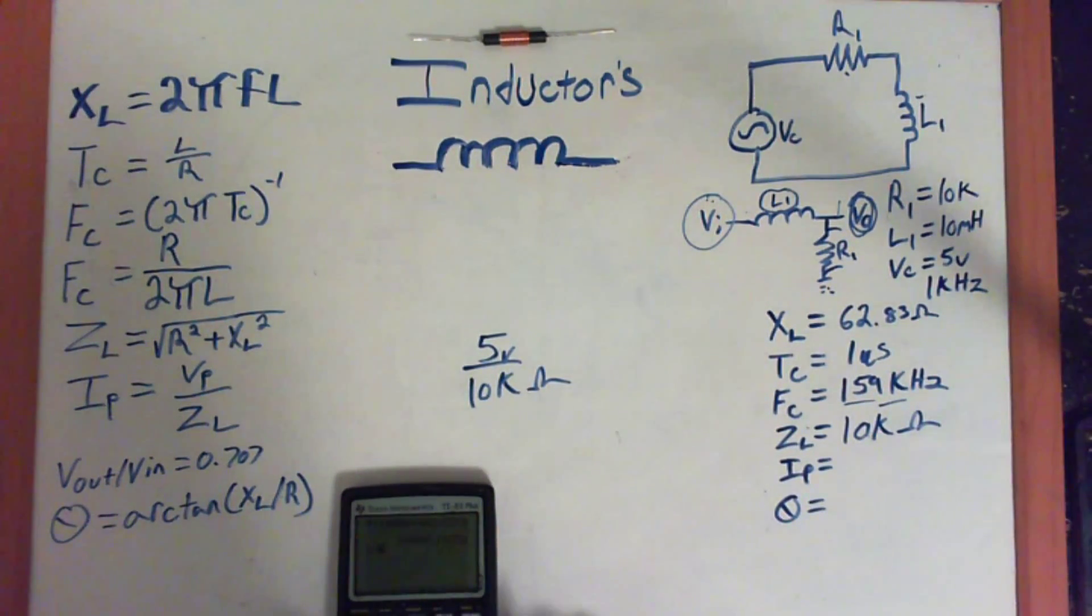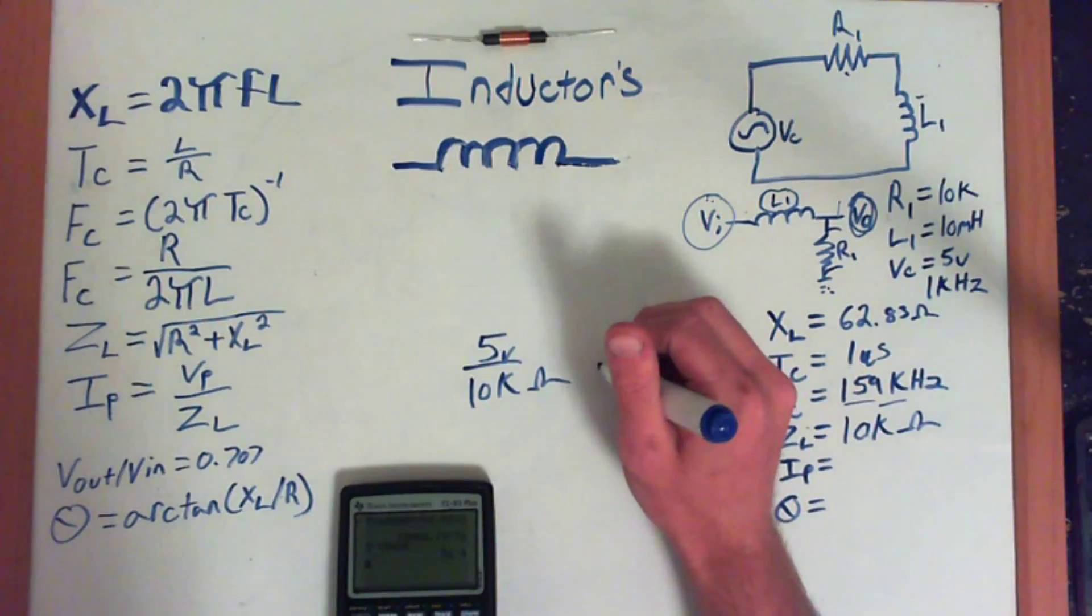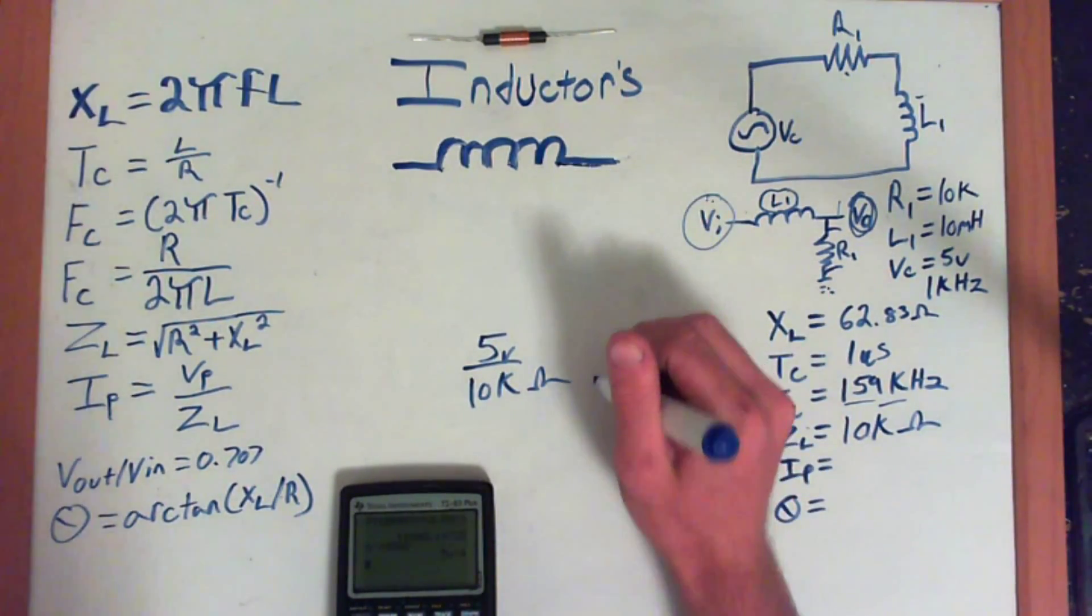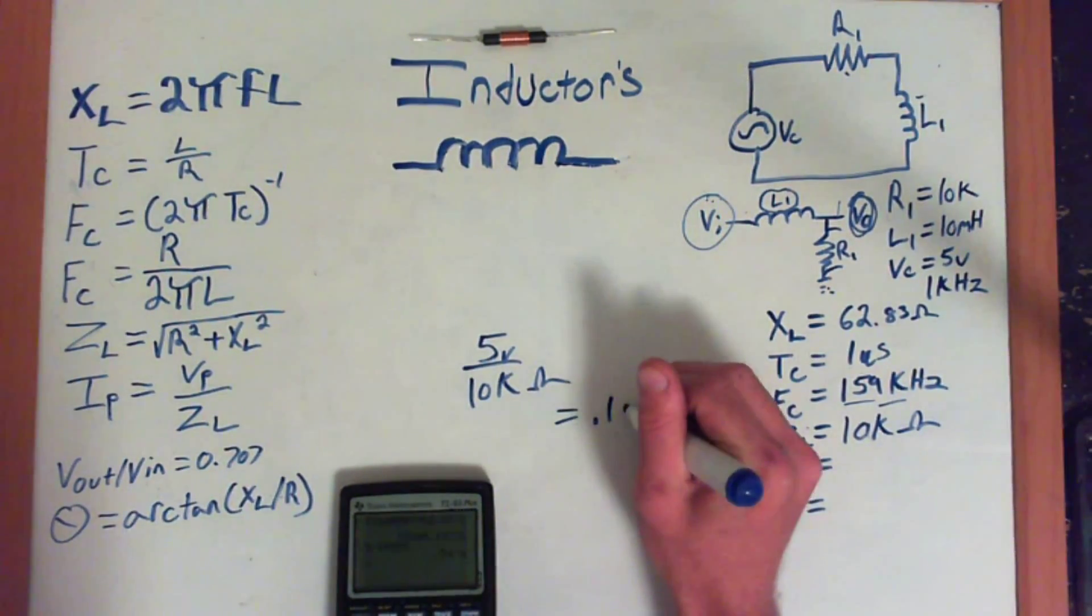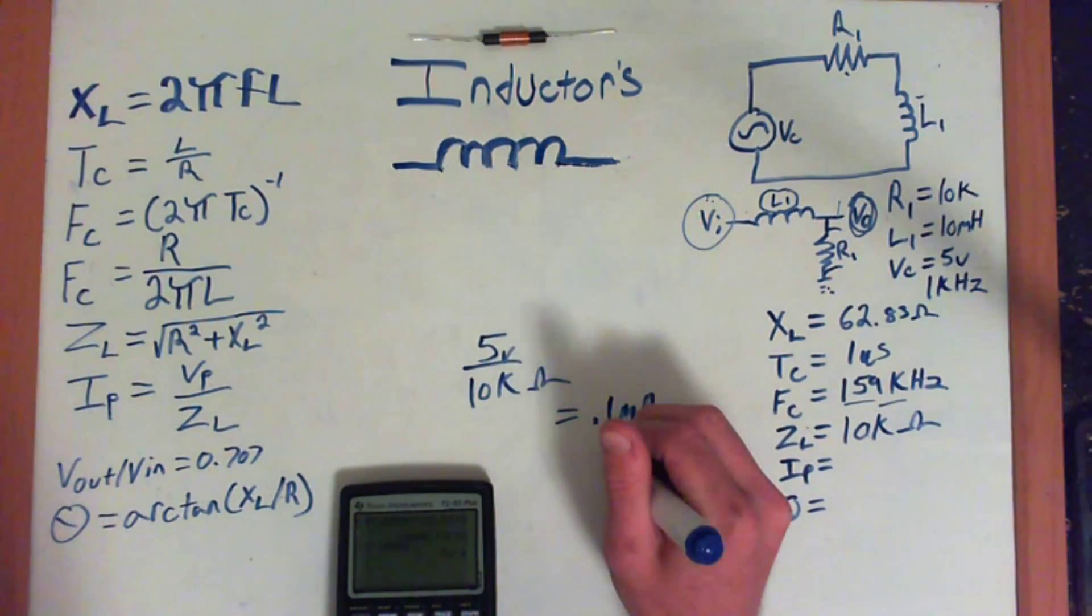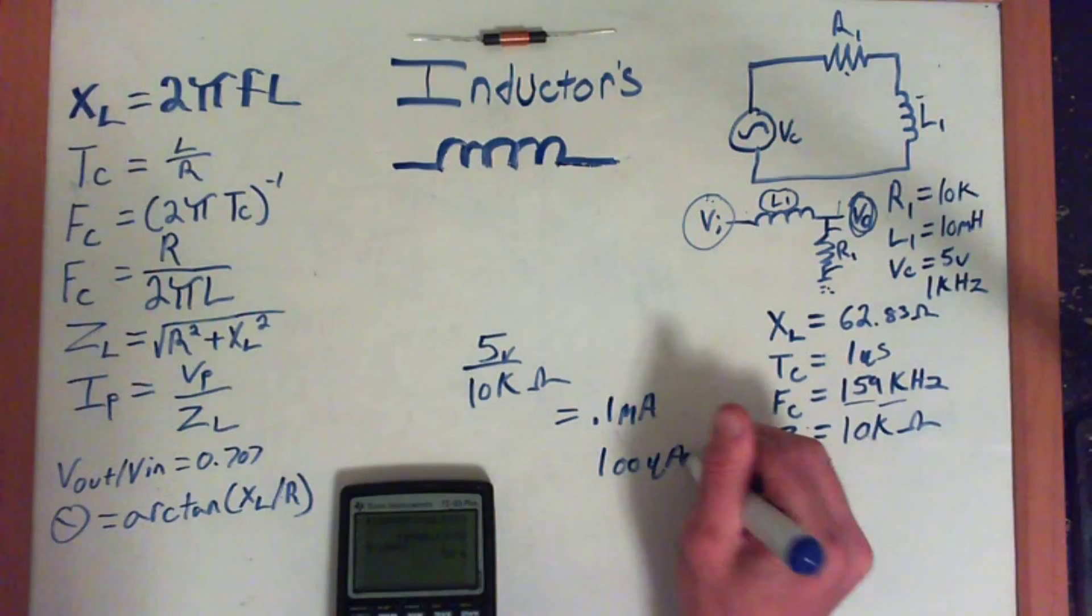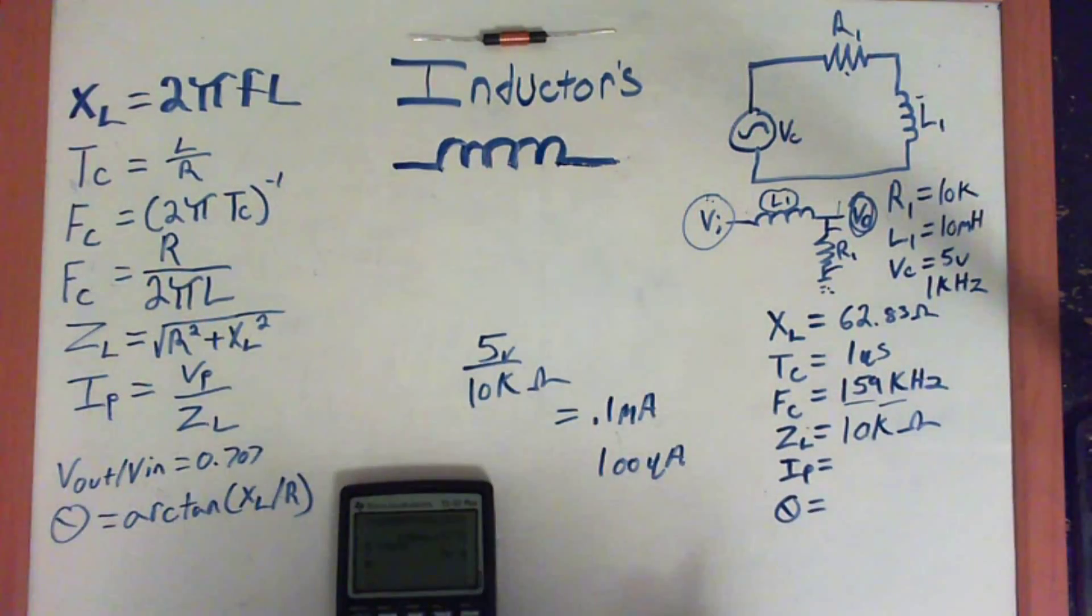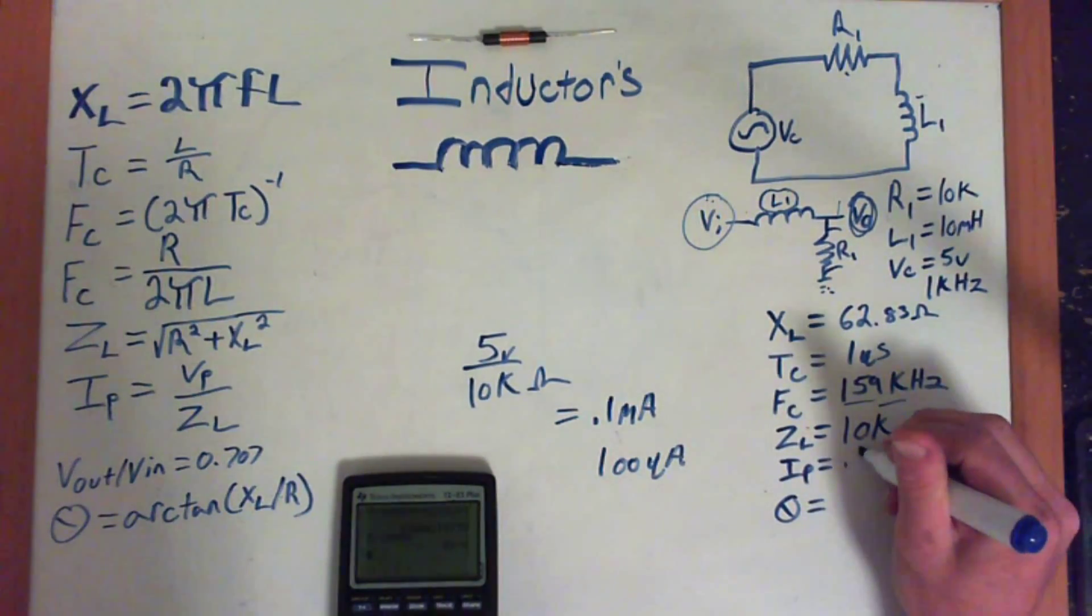So, our peak current is going to be 5 volts divided by our impedance, which is 10K. So, 5 divided by 10,000 equals 0.0005, or we'll just say 0.5 milliamps, or 500 microamps, however you want to put it. But, I'm going to go with 0.5 milliamps, less numbers, less stuff to type in.